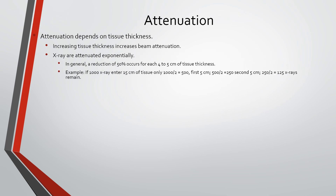For example: if there are 1,000 x-rays entering 15 centimeters of tissue, after five centimeters there will be a 50% reduction, leaving 500. After the next five centimeters, another 50% reduction, and after the final five centimeters, only 125 x-ray photons remain — out of the original 1,000. This illustrates the exponential loss of x-ray photons through attenuation.